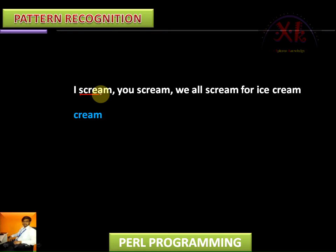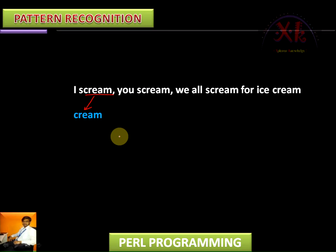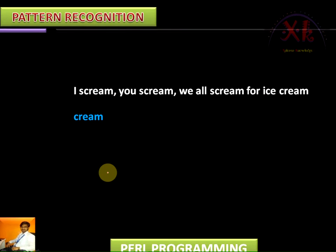Here it is S-C-R-E-A-M and there is still no match, so it continues the process. Now it compares C-R-E-A-M with our given pattern. As they are equal, it stops further comparison, returns a positive value, and accordingly we can say that the particular pattern is found. Let us check out the example and write the program now.